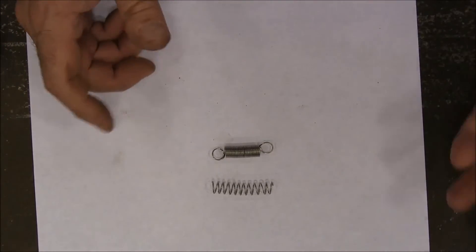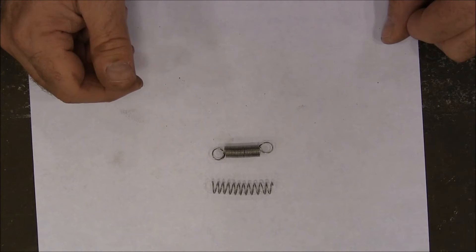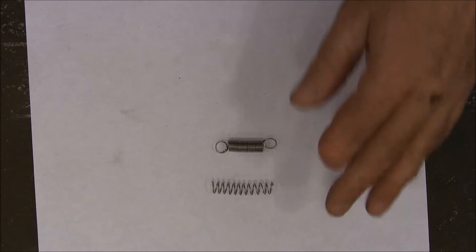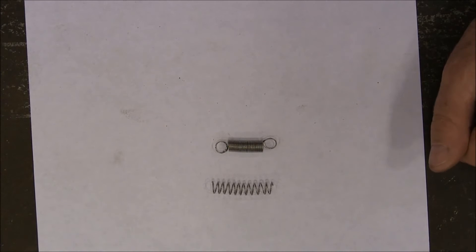So whatever sizes of MIG wire you can get, you can use to make springs. Now, I'm going to show you today how I made them on my metal lathe, but you could make them in just a regular drill or a drill press.